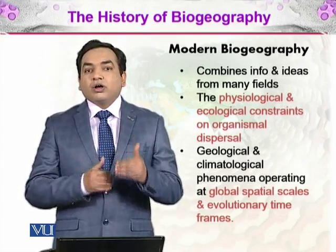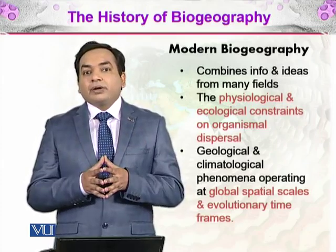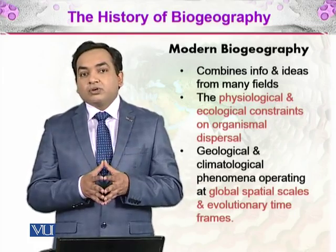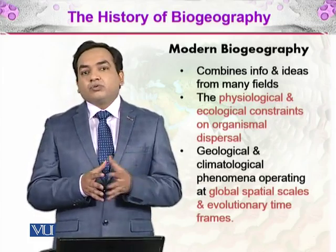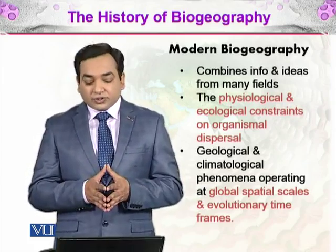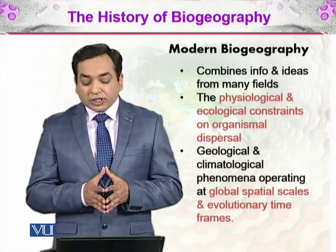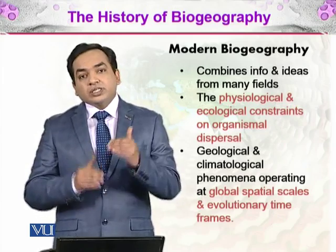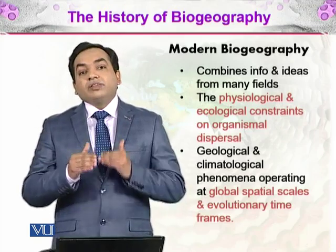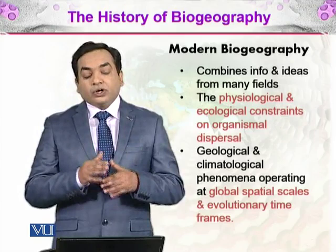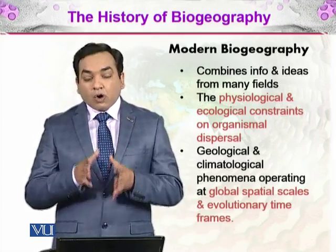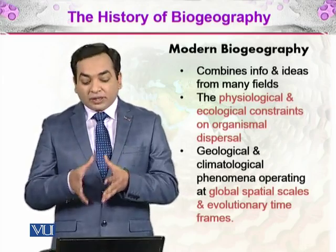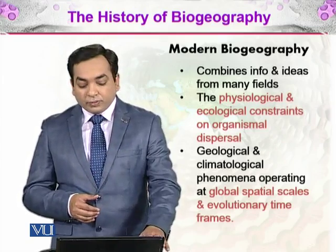For example, tropical rainforests depend on a lot of rainfall and sunlight because they are present on the equator, so they cannot be found towards the poles — those are the ecological constraints. There are also geological and climatological phenomena operating at global spatial scales and evolutionary time frames, showing how Earth changes over time with different climates, giving rise to patterns in which organisms evolved. That is also discussed in modern biogeography.